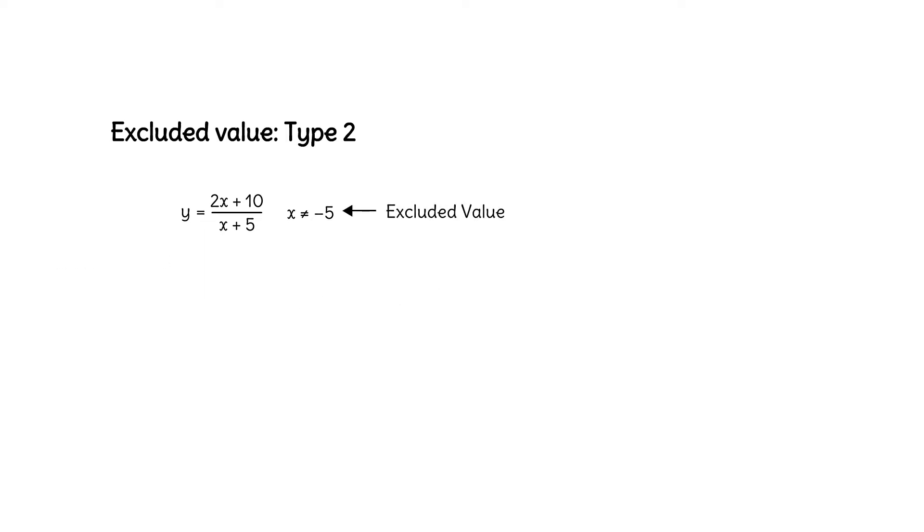How does this type of excluded value impact the function? If we factor the numerator and denominator of this rational function, we can cancel x plus 5. So this function simplifies to y equals 2, but we can't forget our excluded value of negative 5.